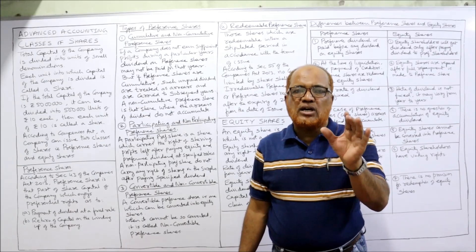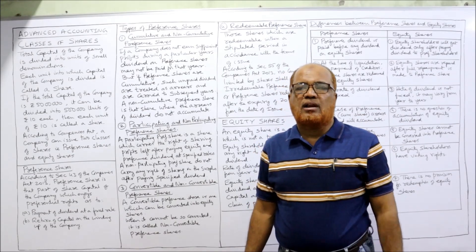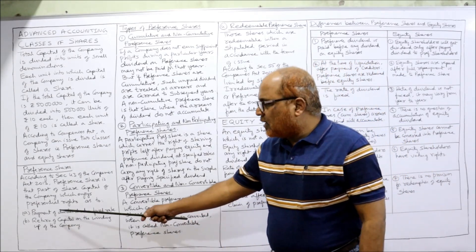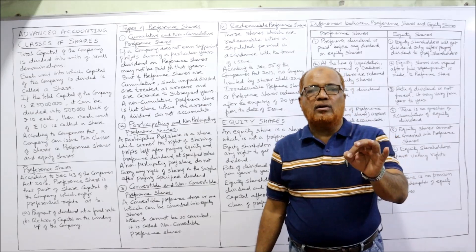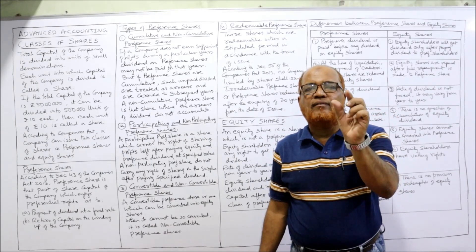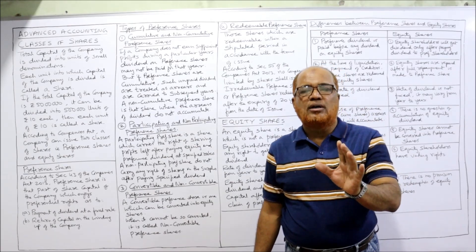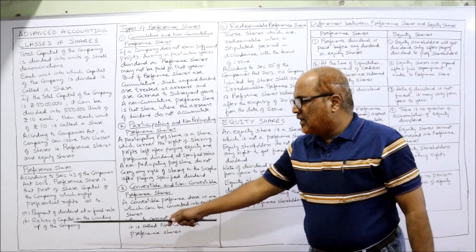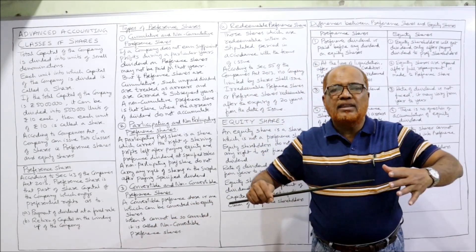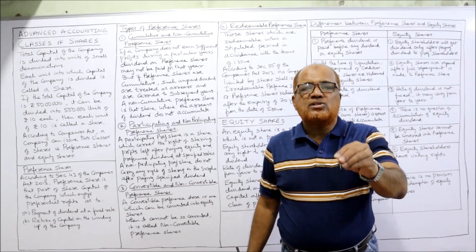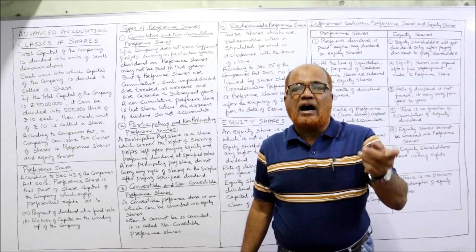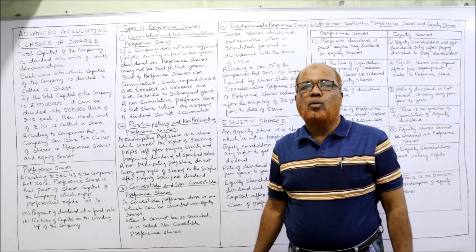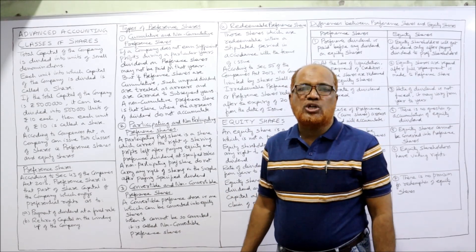Preference shares are that part of share capital of the company which carries two preferential rights. The first right is payment of dividend at a fixed rate — the rate will not change, and when the company issues preference shares it will specify a fixed rate of dividend. The second right is return of capital at the winding up of the company — when the company is wound up, preference share capital is returned first, and after that only equity capital will be returned.